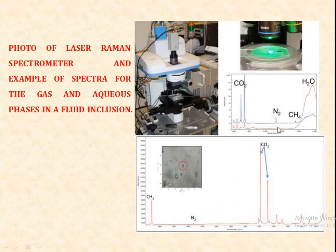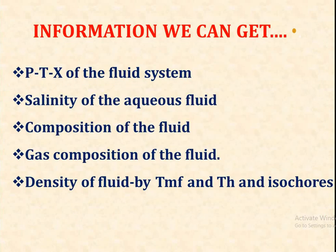The spectra show CH₄, N₂, CO₂, and H₂ — representing the gas and aqueous phase compositions. Information that can be obtained from fluid inclusions includes: the pressure-temperature of the fluid system, salinity of the excess fluid, composition of the fluid, gas composition, and density of the fluid using microthermometry and isochores.